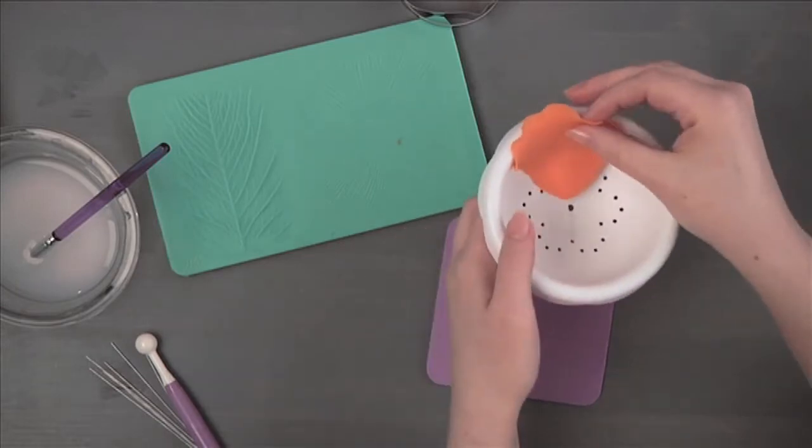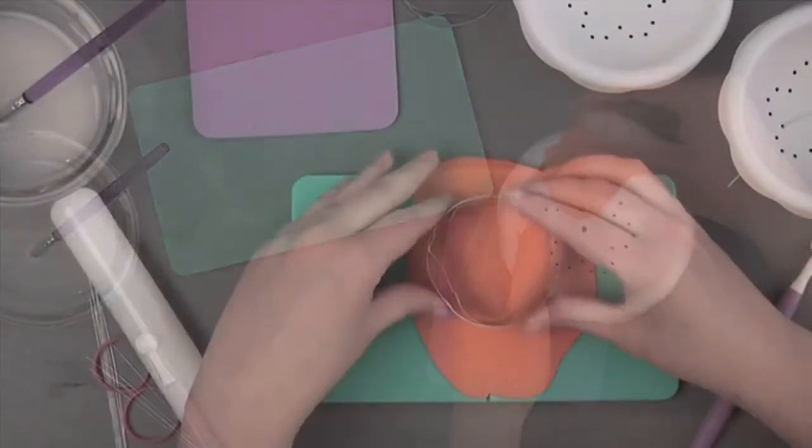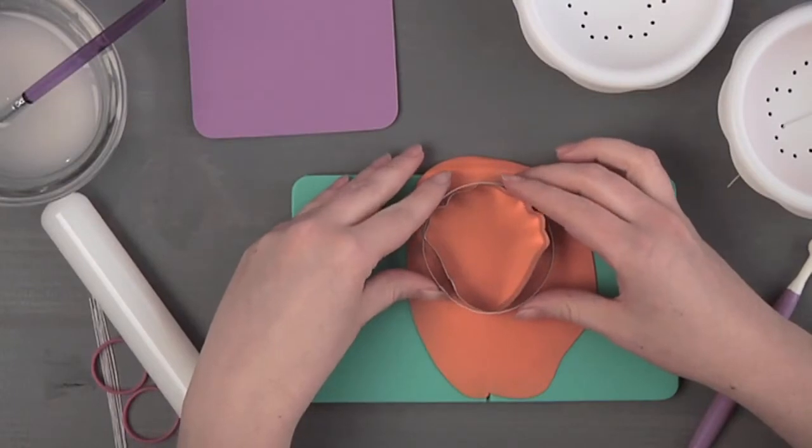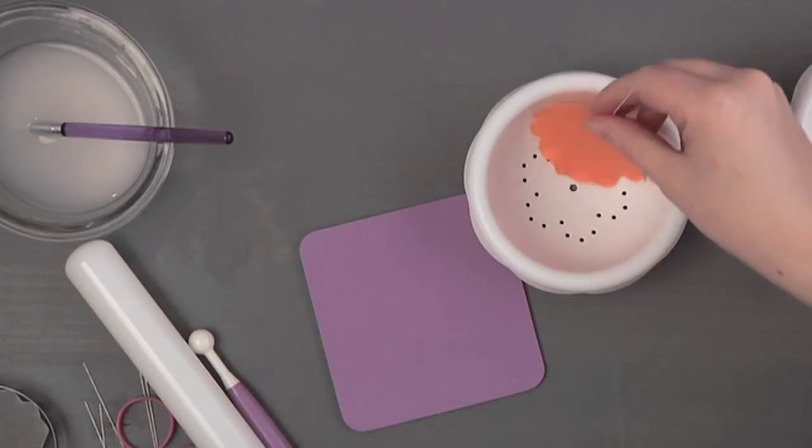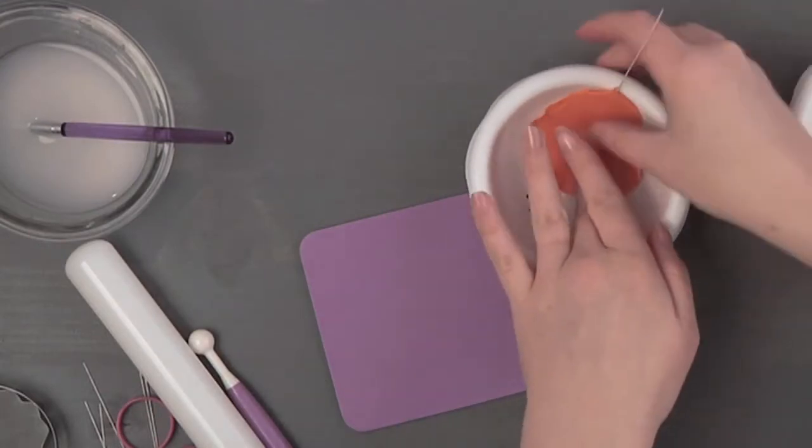Repeat this process to make three additional outer petals. For the inner petals, cut, wire, and ruffle two more petals. Position the petal in the bottom of a dusted flower forming bowl and let dry.